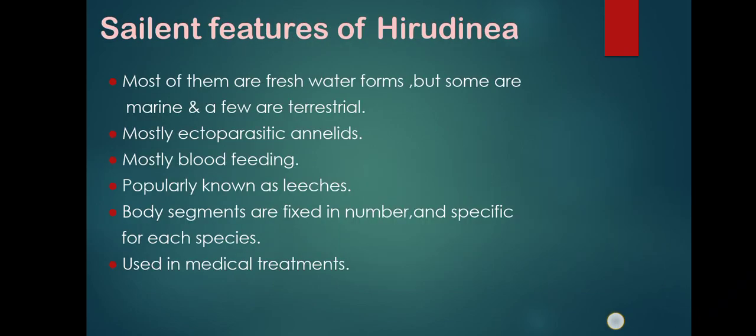The salient features of Hirudinia: most of them are freshwater forms, but some are marine. Terrestrial forms require the presence of moisture for sustaining and are not found in dry areas. They are mostly ectoparasitic annelids, meaning they parasitize outside the body of the host. They are mostly blood-feeding, popularly known as leeches. Body segments are fixed in number and specific for each species, and they are used in medical treatments.